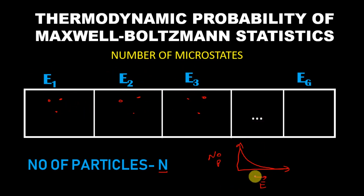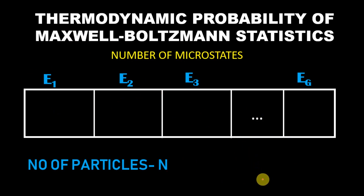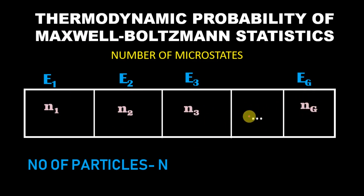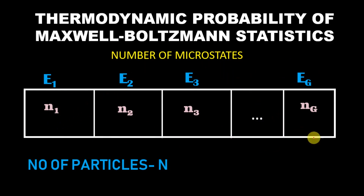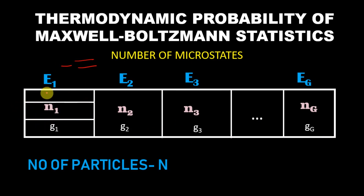This axis is energy and this distribution is the Maxwell-Boltzmann distribution function. We need to derive this. We will first assume that this box contains n1 particles, this box contains n2, this box contains n3, and so on to ng particles. We will apply the conditions for a Maxwell-Boltzmann distribution function and find how n1, n2, n3 will look. First, we need to find the number of microstates — the number of ways these n particles can arrange in here. Also, these energy levels can be degenerate, meaning there is a splitting of energy levels. You can imagine this by further dividing each box into sub-levels.